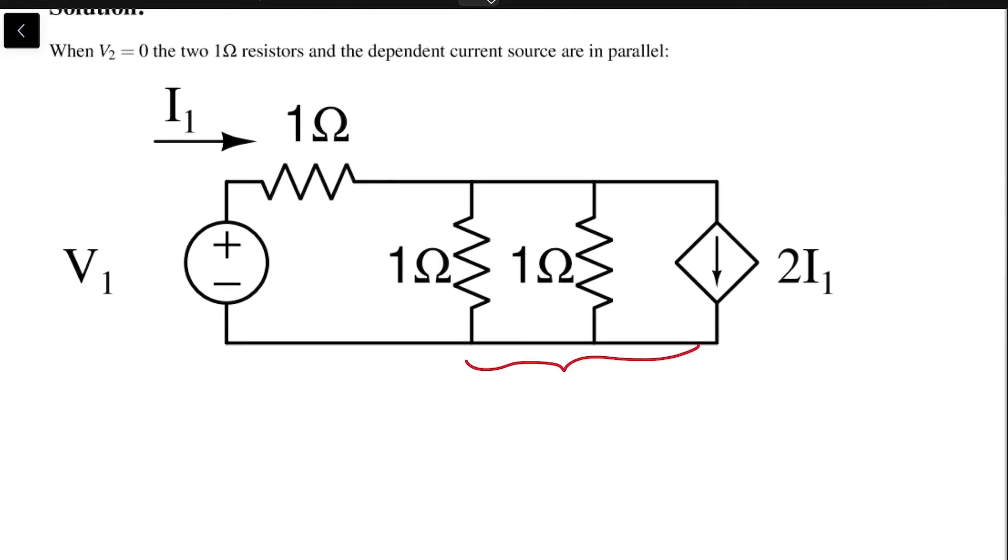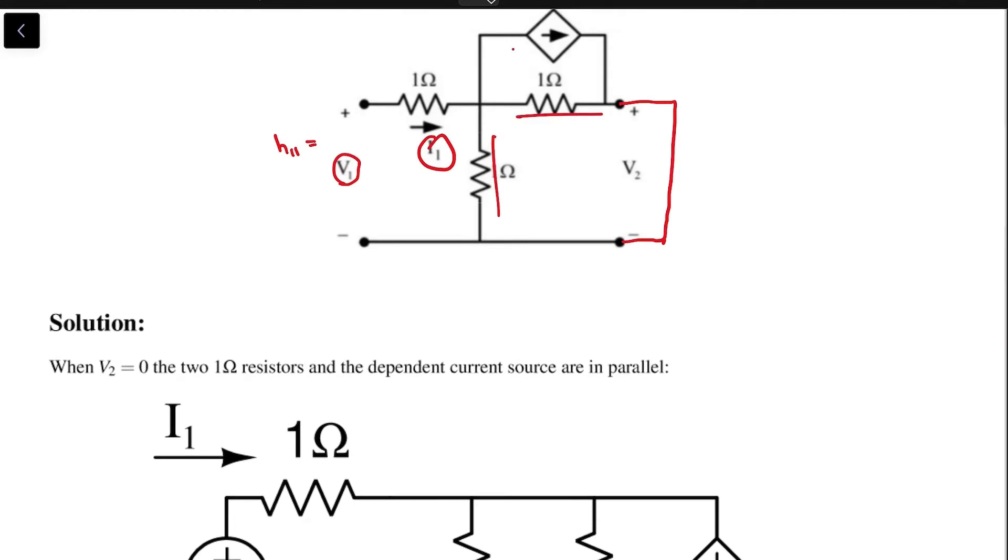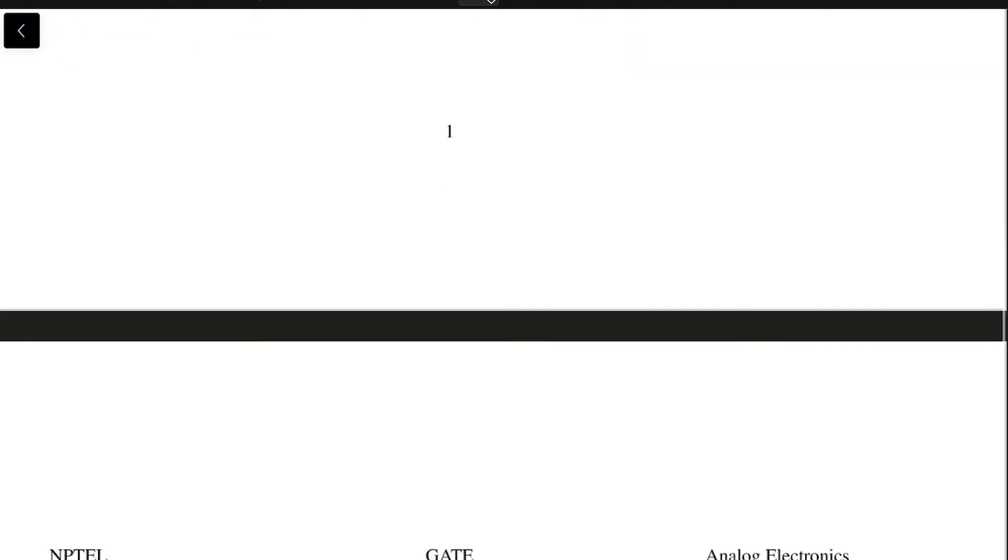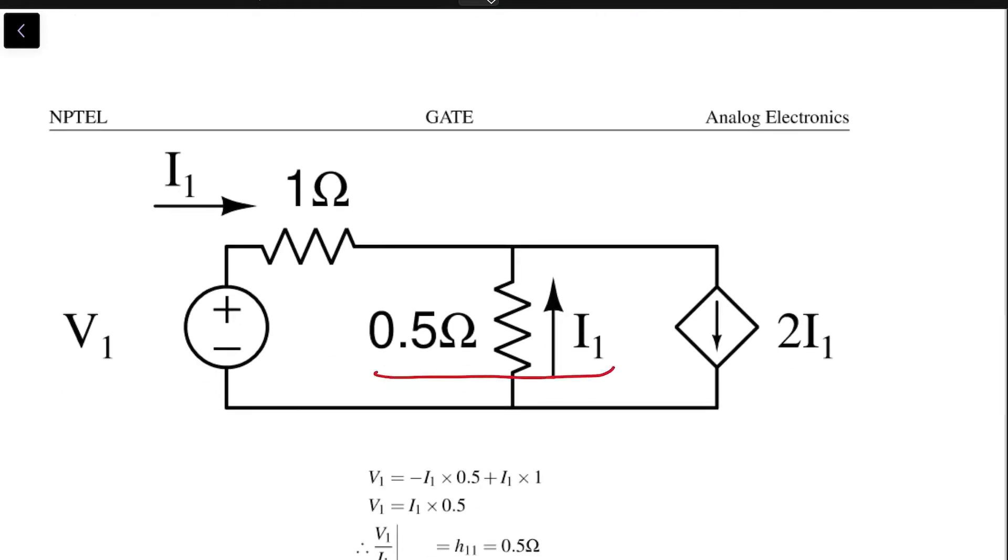The circuit reduces as follows: these three branches become in parallel. Now you can reduce the parallel combination - 1 ohm in parallel with another gives 0.5 ohms.